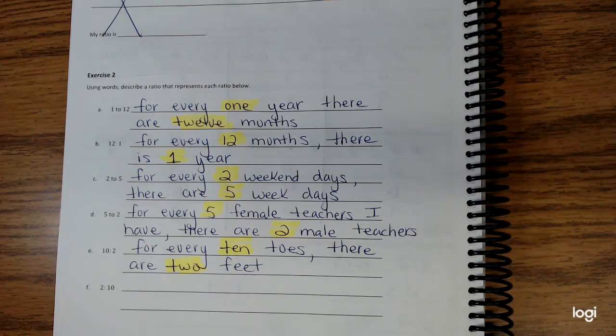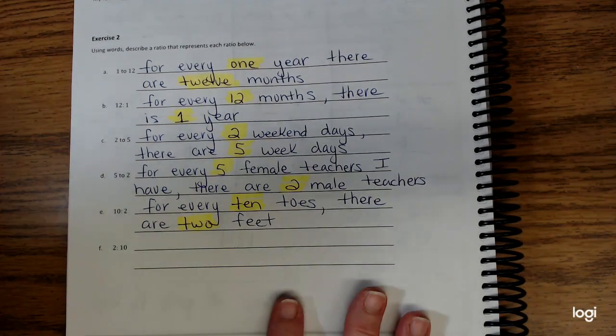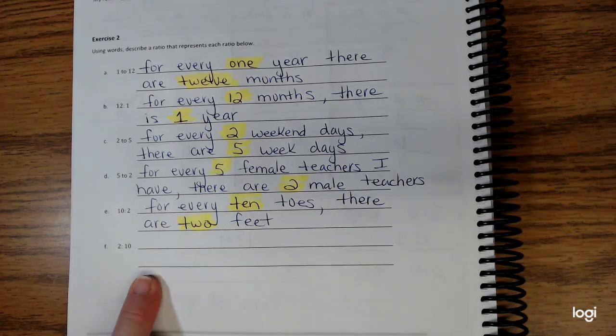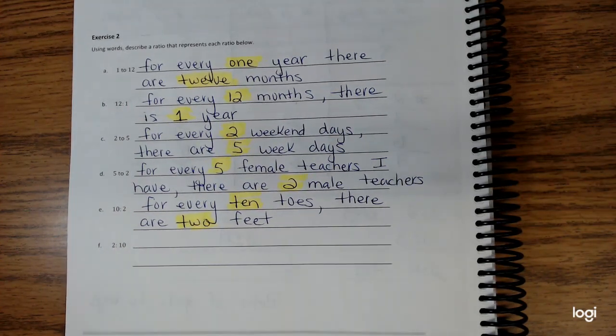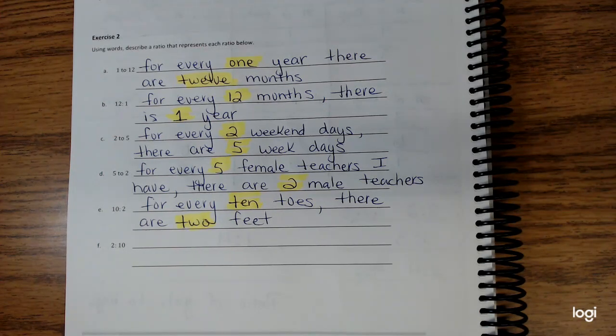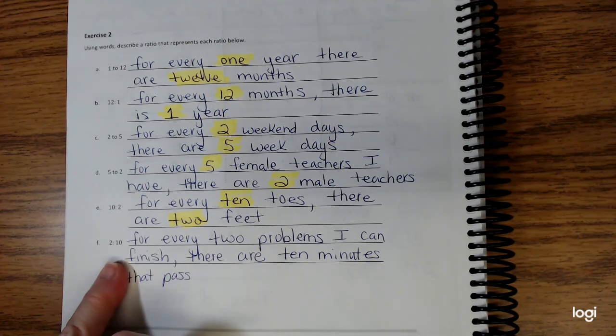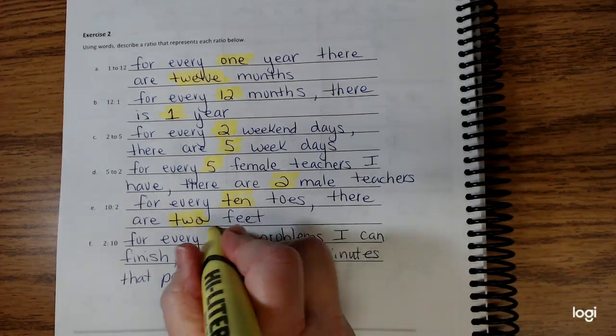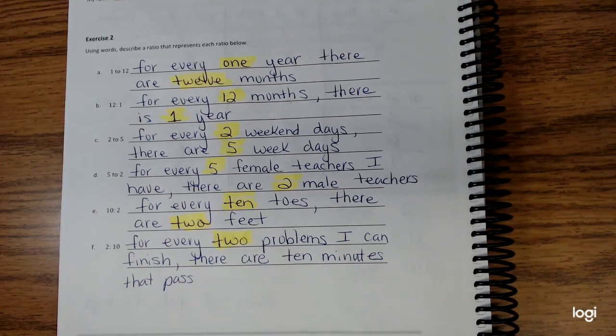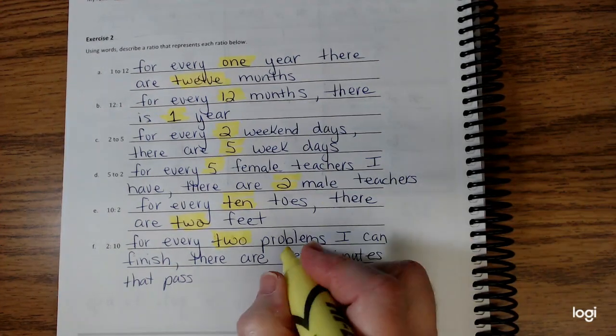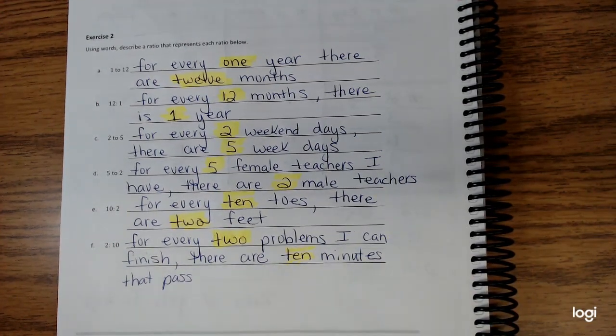Last one: see if you can come up with a situation for 2 to 10 and try not to use feet and toes. See if you can come up with something else. The story that I ended up coming up with is for every two problems I can finish, there are ten minutes that pass.